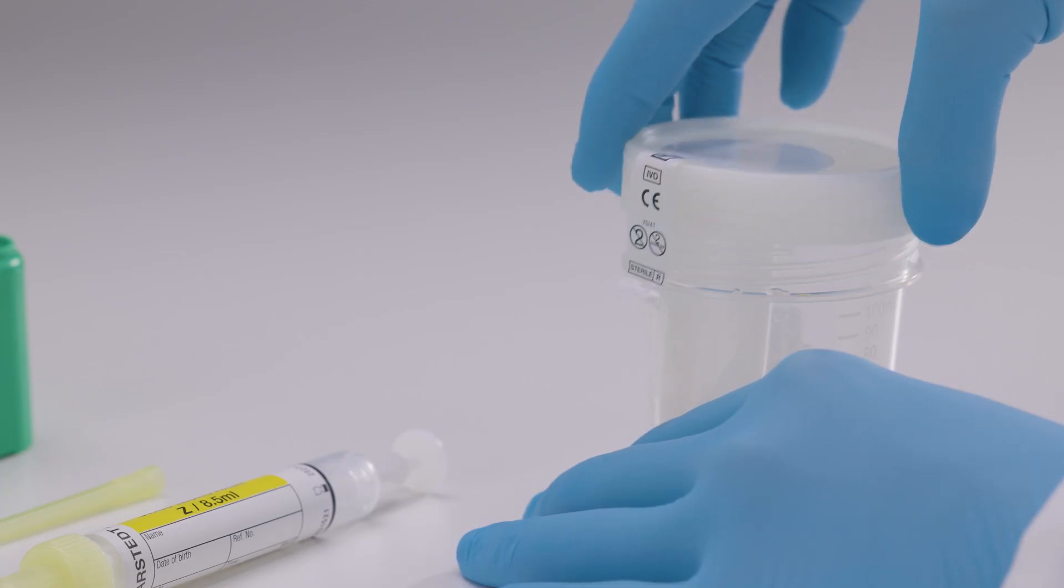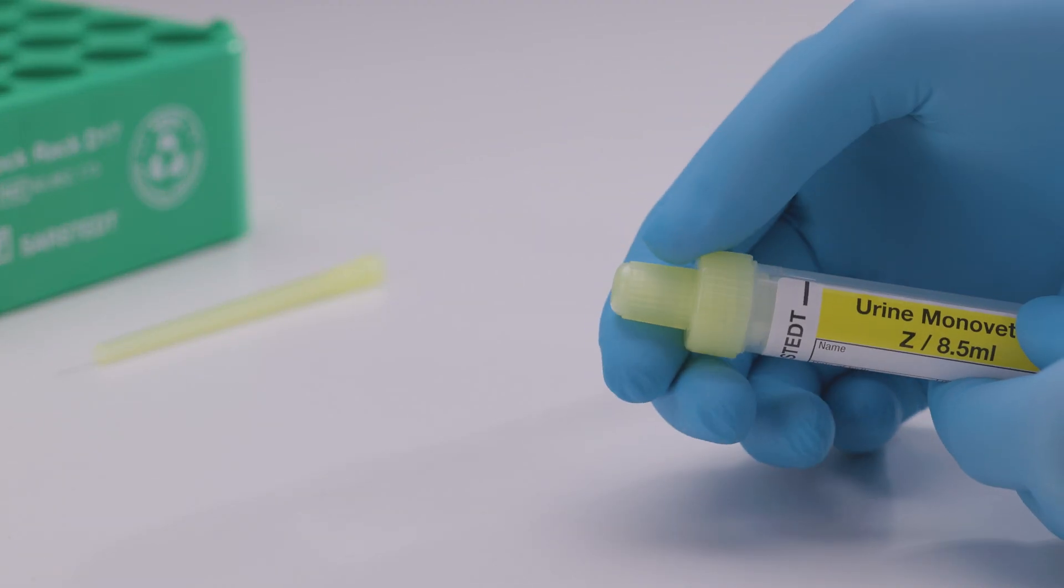Open the NFT cup, remove the stopper from the Urine MonoVet and set it aside.